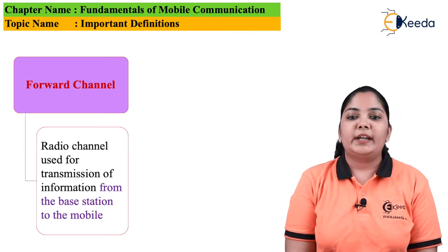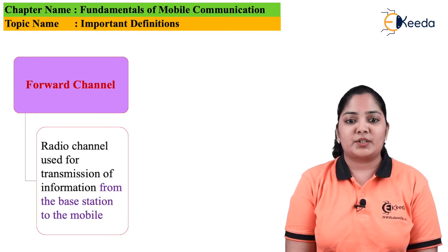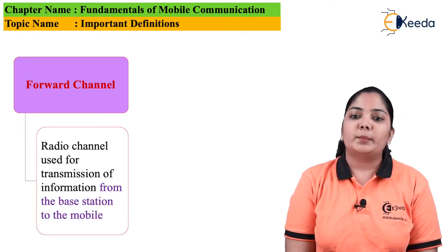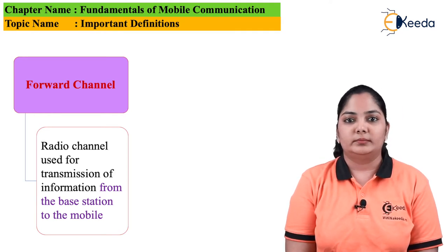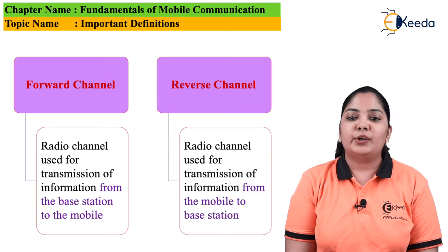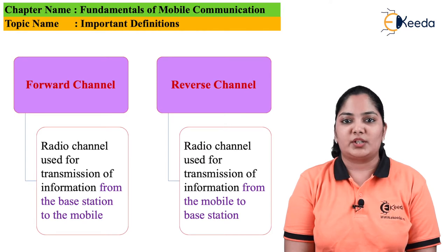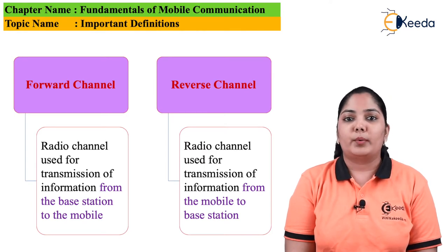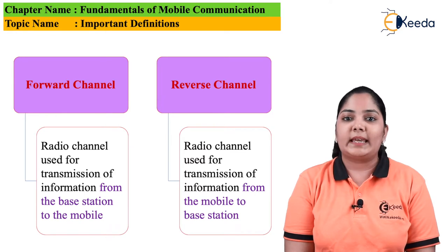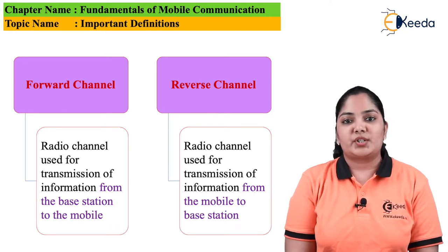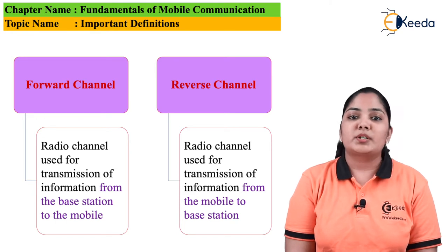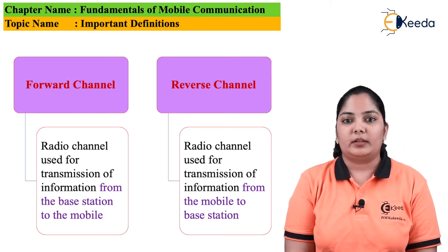Forward channel: the radio channel used for transmission of information from the base station to the mobile. Reverse channel: the radio channel used for transmission of information from the mobile to the base station. There are two types of forward channel — forward voice channel and forward control channel — and two types of reverse channel — reverse voice channel and reverse control channel.